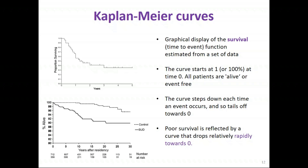The Kaplan-Meier survival curve plots the proportion surviving on the y-axis and time on the x-axis. In the top example on this slide, time is measured in years and the proportion surviving ranges from zero to one. The curve always starts at one or 100% at time zero, where all patients are alive and event-free.